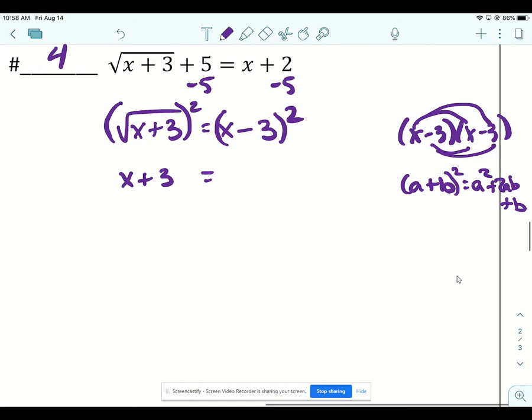So we're going to square x and get x squared. Then we're going to multiply x times negative 3 and then multiply that by 2. So that's going to be negative 6x, and then we're going to square negative 3.